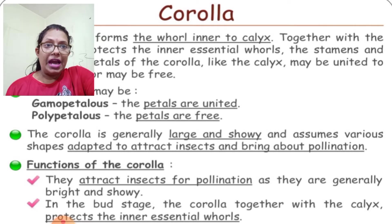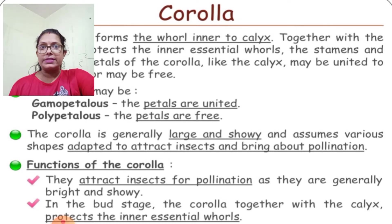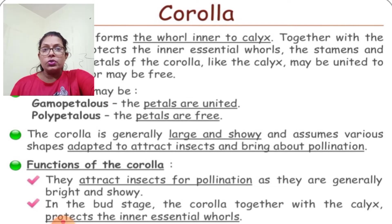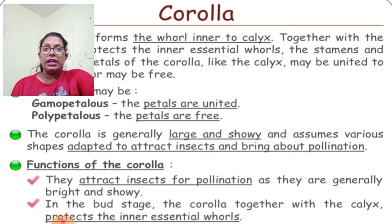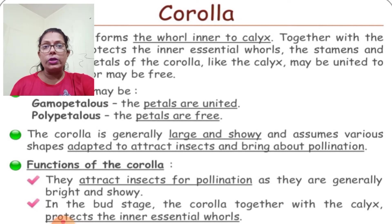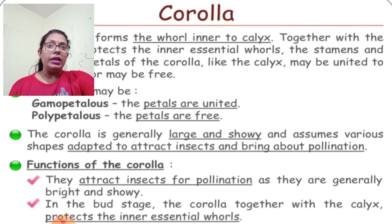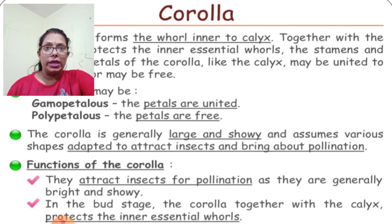The corolla is generally large and brightly colored so that it can attract insects, birds, or other living organisms. When insects come near — attracted by the color, fragrance, or nectar — pollen grains stick to their bodies. These pollen grains are then transferred to the female flower. This process is known as pollination, after which fertilization occurs.